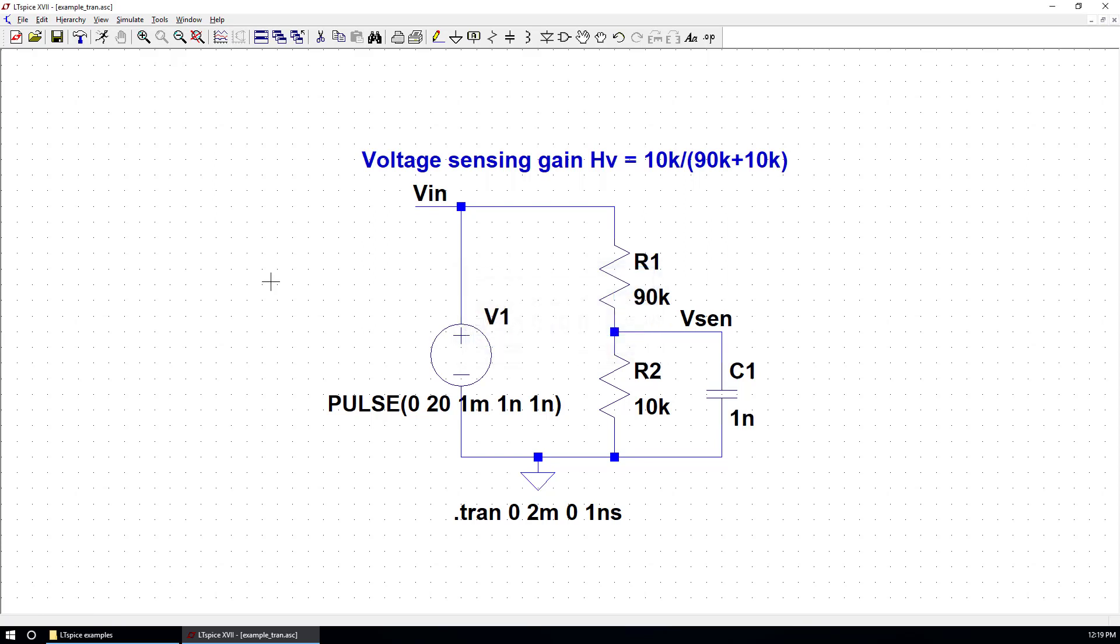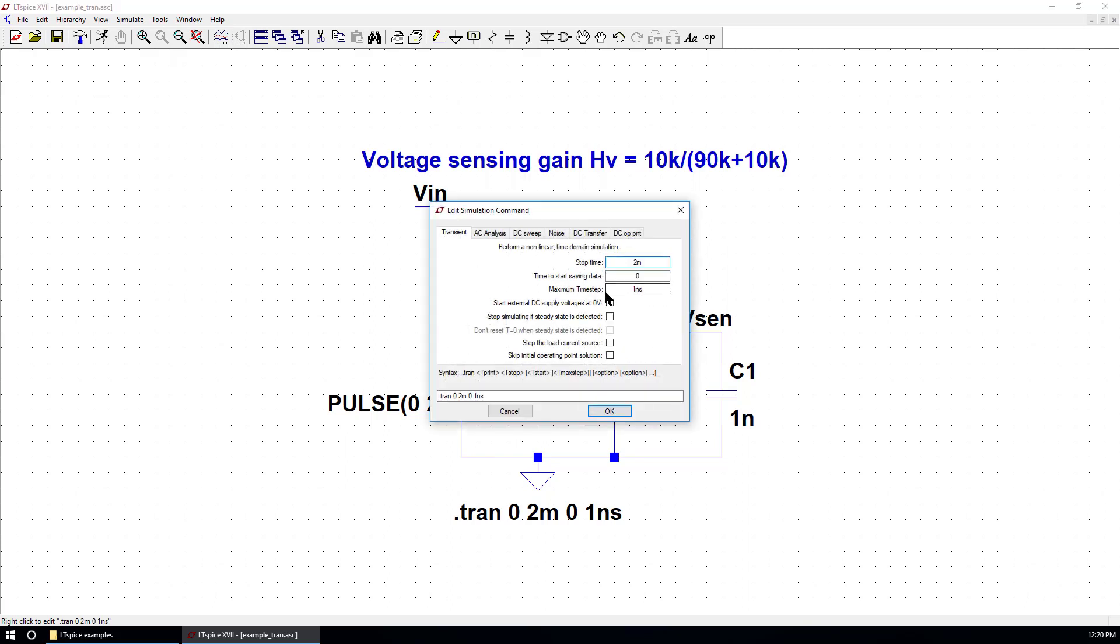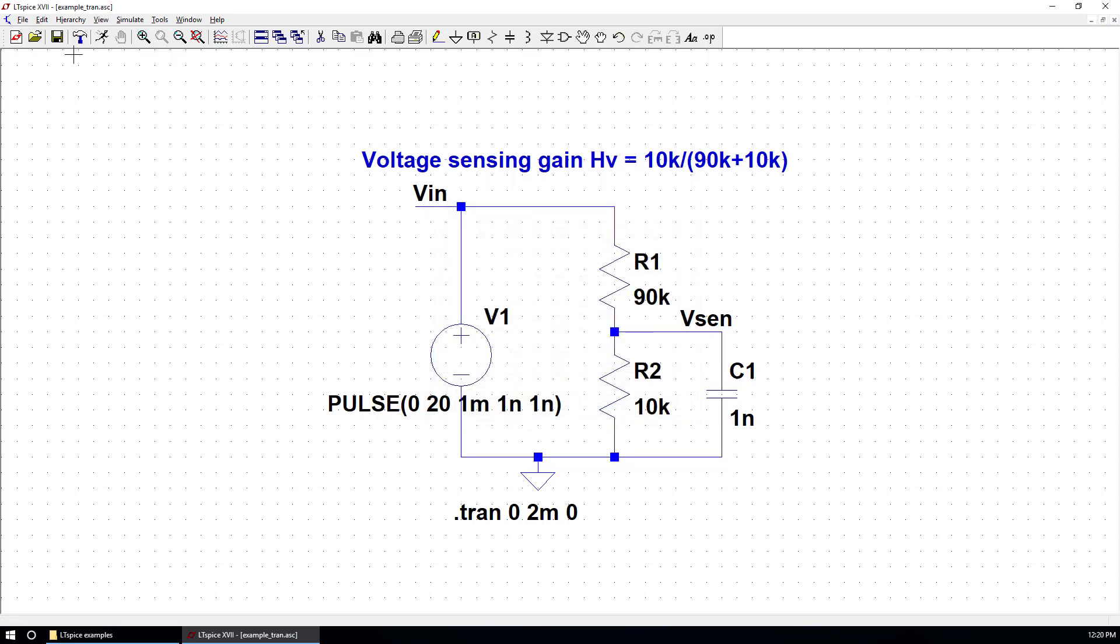Now we can simulate the transient behavior. Before we start, we want to change the maximum time step. We delete it so that the LT SPICE can use variable time step. And we are ready to go.